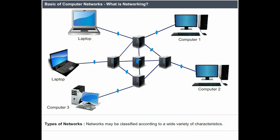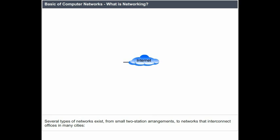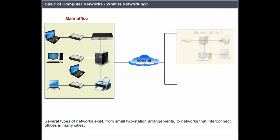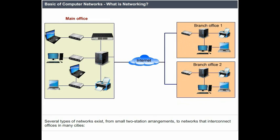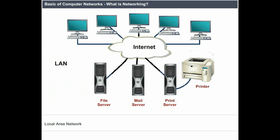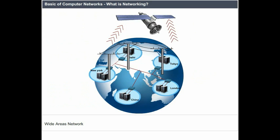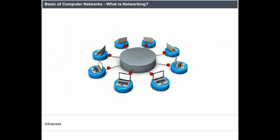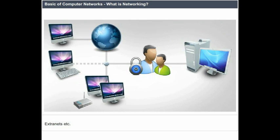Types of Networks. Networks may be classified according to a variety of characteristics. Several types of networks exist, from small two-station arrangements to networks that interconnect offices in many cities. These include local area networks, wide area networks, the internet, intranets, and extranets.